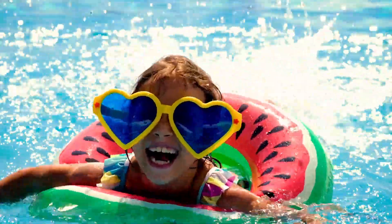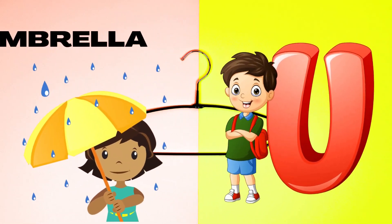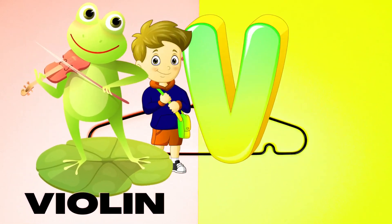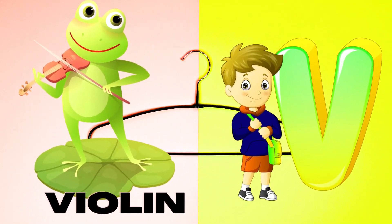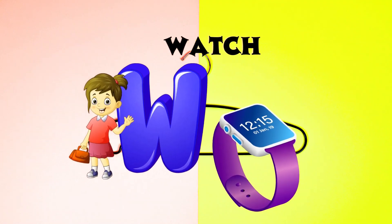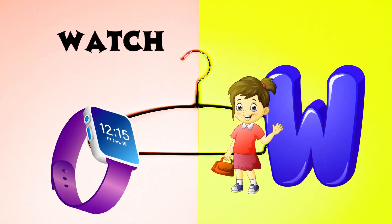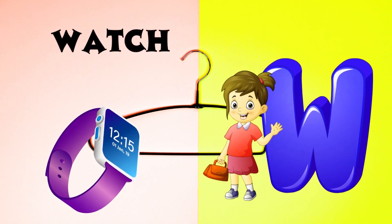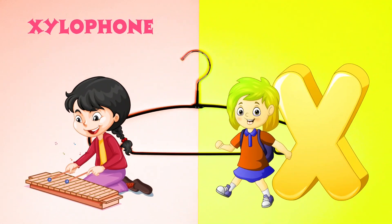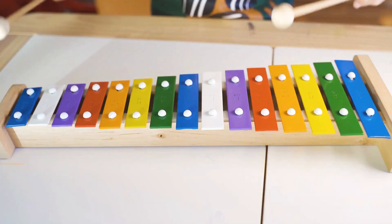U is for Umbrella, U-U-Umbrella. V is for Violin, V-V-Violin. W is for Watch, W-W-Watch. X is for Xylophone, X-X-Xylophone.